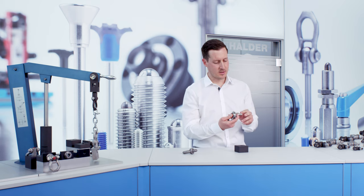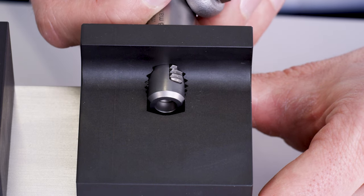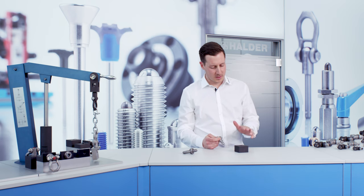The threaded lifting pin is self-locking because the threaded segments do not move once the bolt is released. Unintentional loosening of the load is therefore impossible.